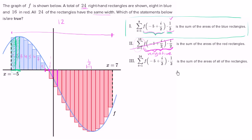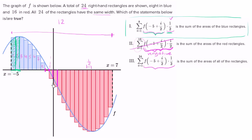The last expression claims to be the sum of the areas of all the rectangles. It goes from i equals one to 24. If it went from i equals one to eight, it would match the first choice. But once we get past i equals eight — when it reaches i equals nine — this expression turns negative, giving the negative area for those rectangles. So it essentially nets out the positive area against the negative area. It's not the sum of the areas of all the rectangles; it's this area essentially minus that area.